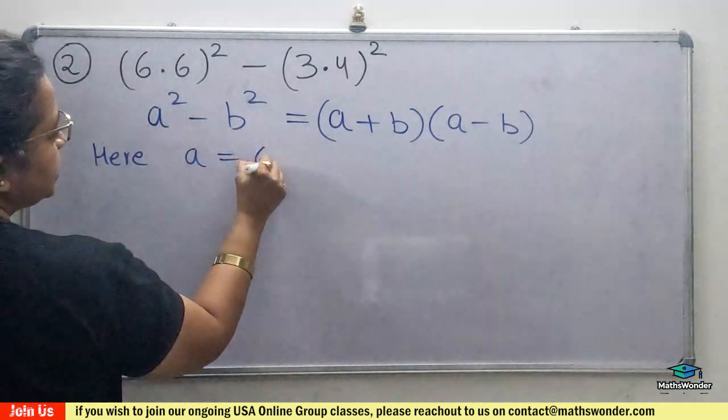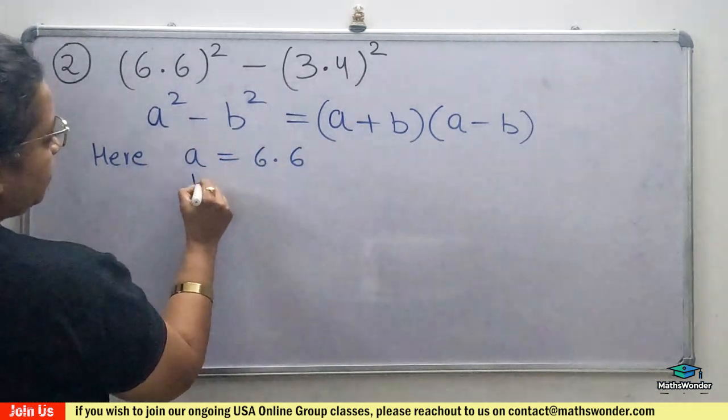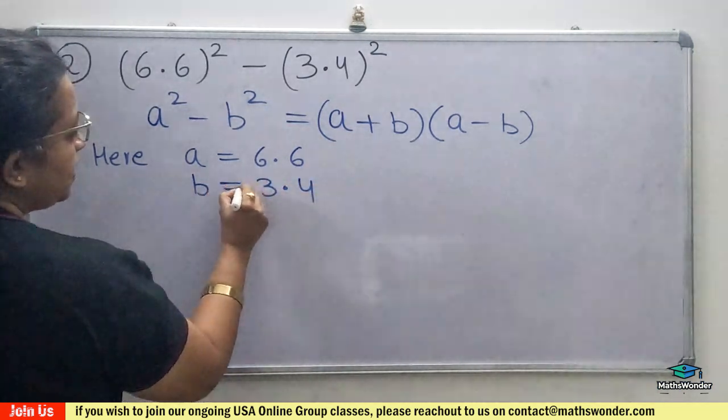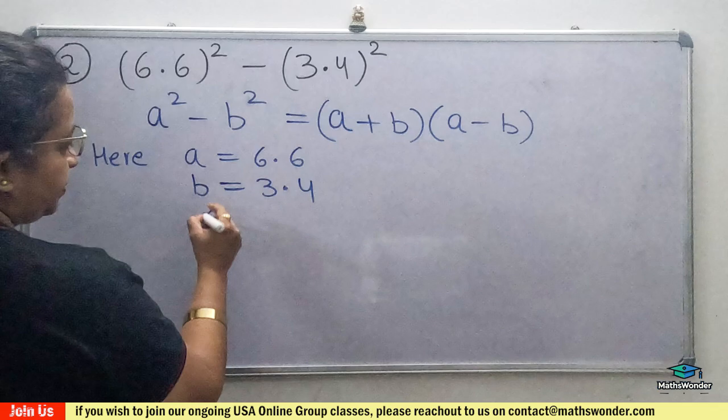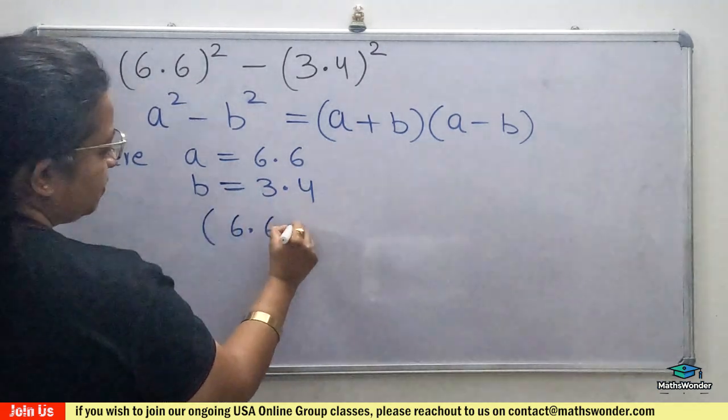Here a is 6.6, yes, and b is 3.4. Now substitute in your identity: so a is 6.6 plus 3.4, the second is 6.6 minus 3.4.